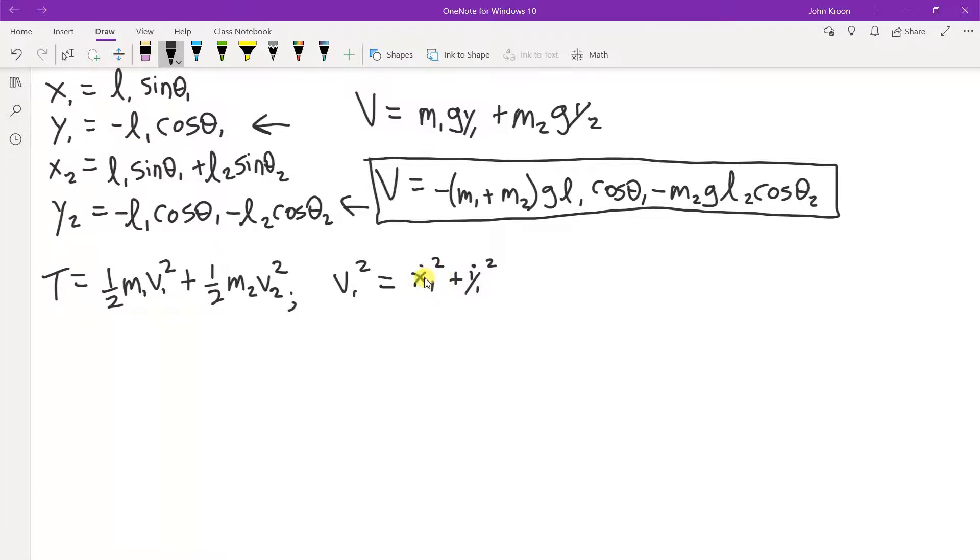And then we need to write down time derivative of x1 and y1, square each of them, add them up. You'll notice there's a sine here and a cosine here. So we will be getting a sine squared theta 1 and a cosine squared theta 1. So we're going to have some cancellation going on here. So let's look at that real quick.